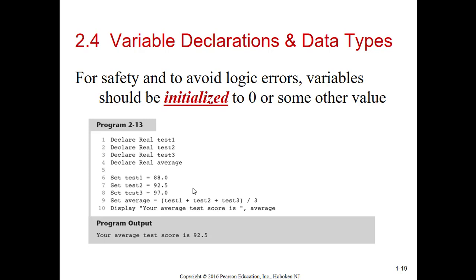It says for safety and to avoid logic errors, variables should be initialized to zero or some other value. That's what they're doing on lines six, seven, and eight. You don't have to in every programming language, but you have to in a lot of them. It's not wrong if you don't do it. It'll still work. Worst-case scenario, it'll give you an error saying this value must be initialized. Some programming languages will do that, some it'll work fine.